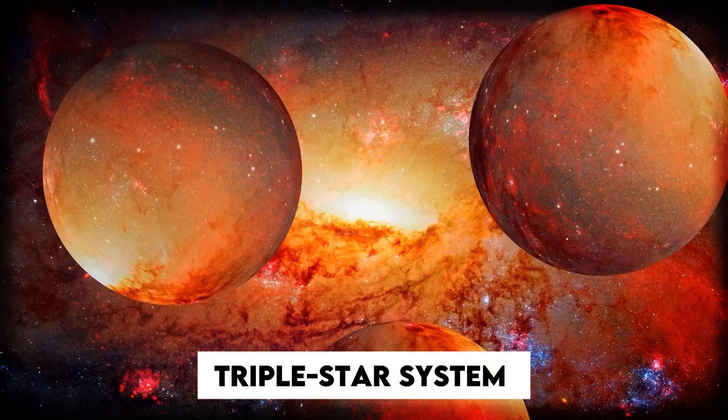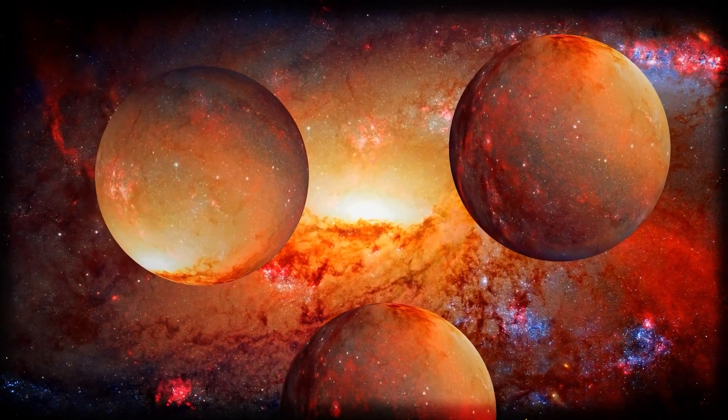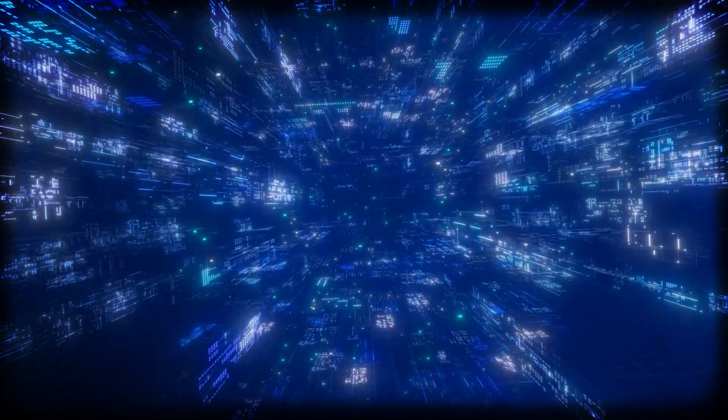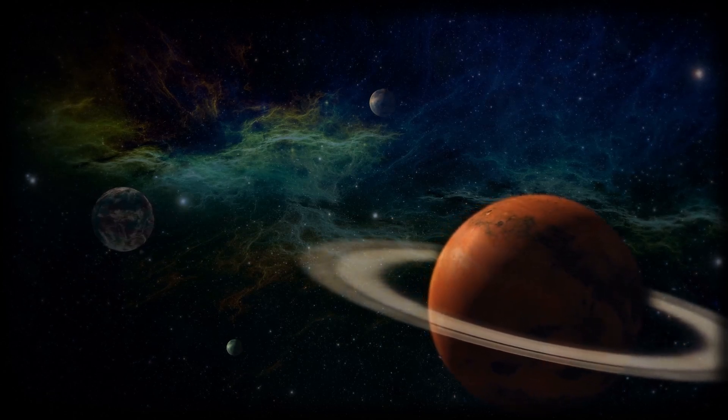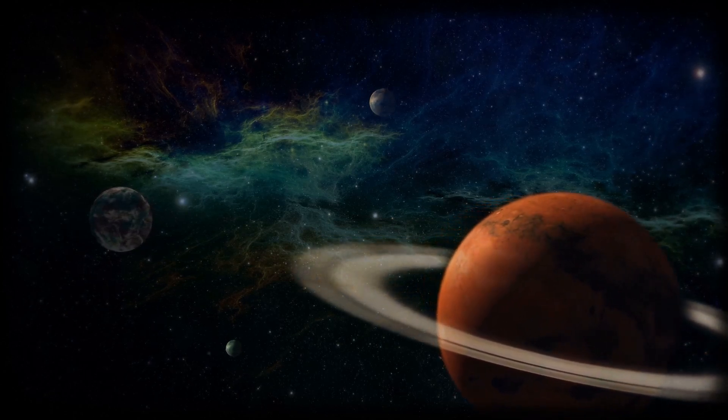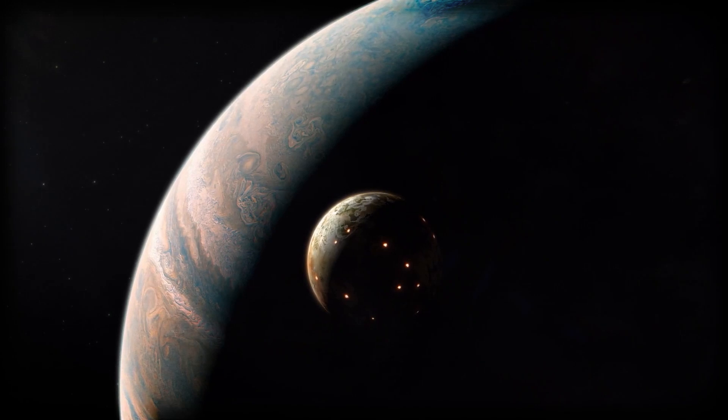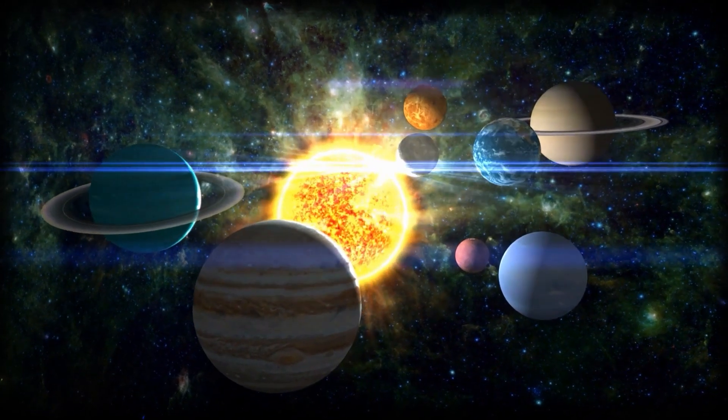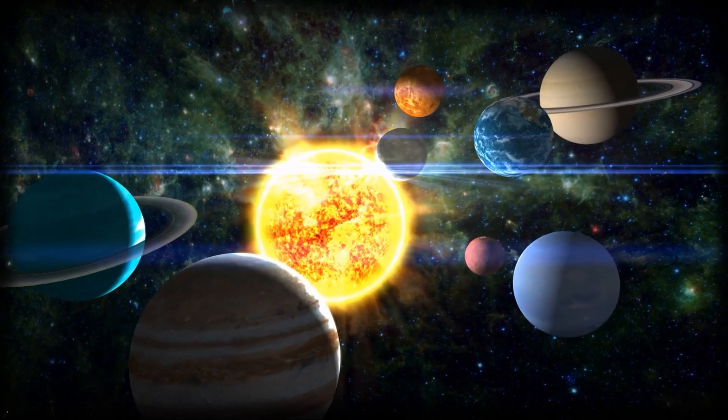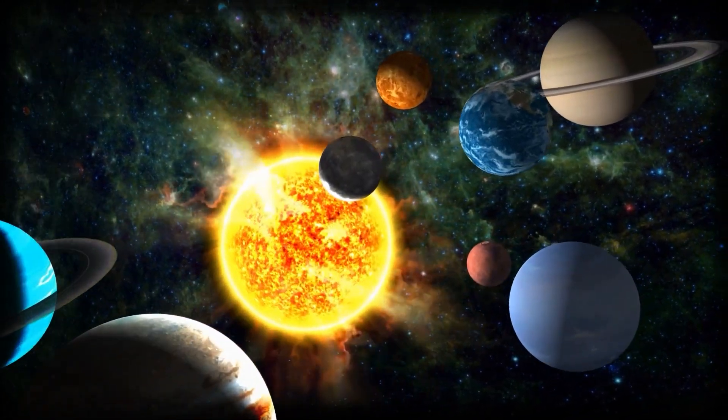Finding a planet in a triple-star system is rare. These kinds of systems are chaotic, and it's tough for a planet to settle into a stable orbit without being flung out into space. But Koi 5 AB managed to hold on, and that makes it a goldmine for understanding how planets form in extreme environments.